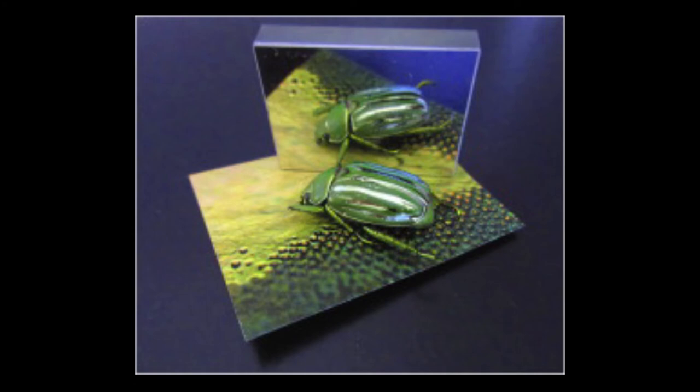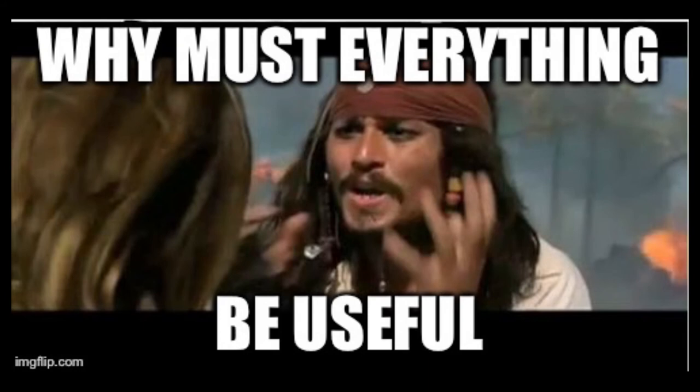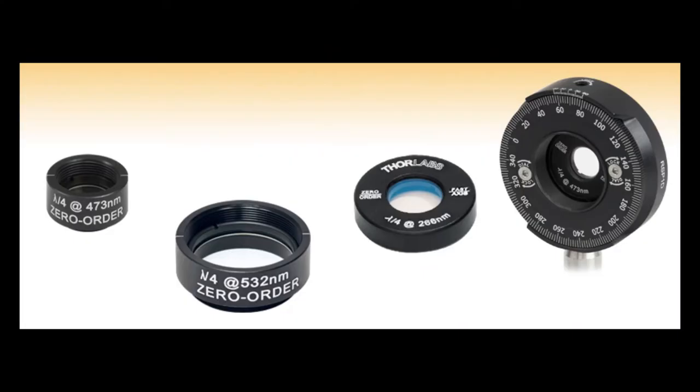Still, scarab beetle cuticles can produce circularly polarized light, and knowing how that works could be very useful. Circularly polarized light is hard to produce, and a lot of tech applications actually require it. Currently, how we produce that type of polarization is via the use of quarter wave plates that often cost up to $1,000 each.